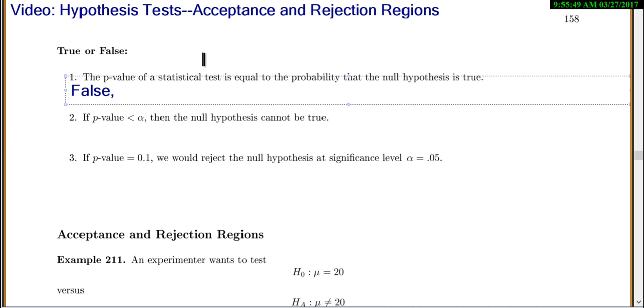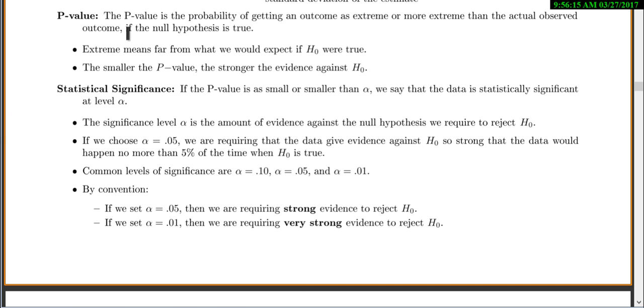the definition of the p-value is quite... We'll remind ourselves the p-value is the probability of getting an outcome, so getting our sample data, as extreme or more extreme than the actual observed outcome. So it's the probability of getting our data or something more extreme if the null hypothesis is true. And so, again,